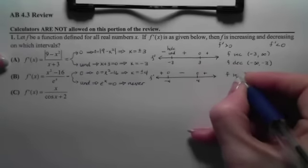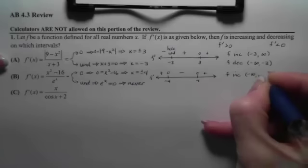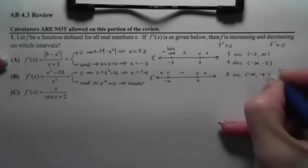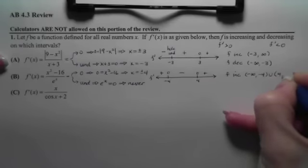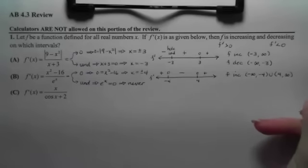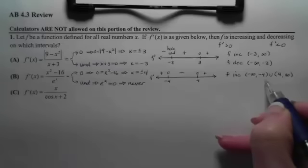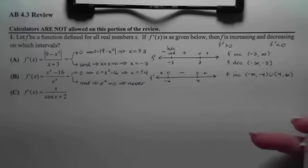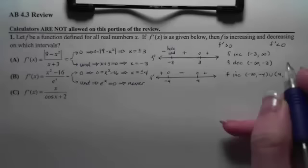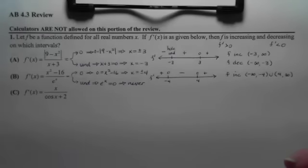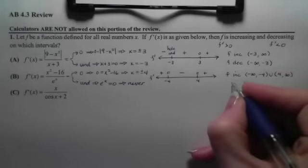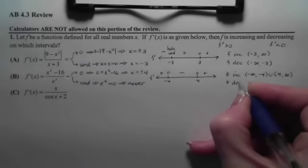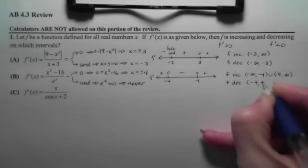So we can see that f is increasing from negative infinity all the way up to negative 4, and then we will pick up again and increase from 4 to infinity. Now notice on here that we have a choice. Depending on how your book defines increasing and decreasing, some books will include the endpoints and other books will not. And I've seen it show up both ways on the AP exam. So you could have closed to these negative 4 and 4 brackets and you'd still be correct.